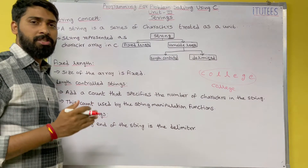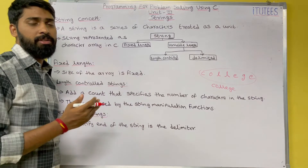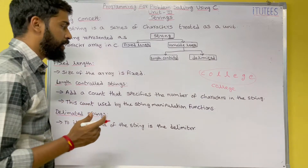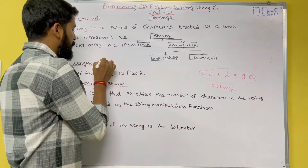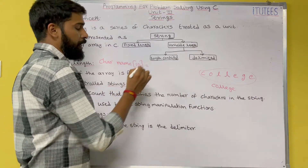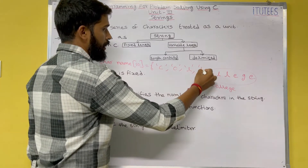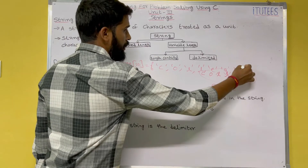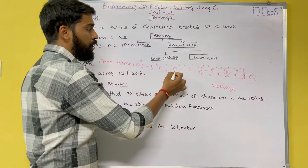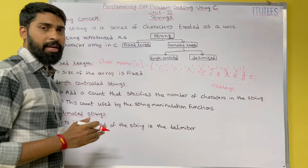In C, a string is represented as a character array. In our previous classes we learned about arrays. We can represent a string in C using a character array. For example: char name[10] = {'C','O','L','L','E','G','E'}. The array name is 'name' and we store all these characters in it. There is no separate string data type in C, so we use a character array to represent strings.